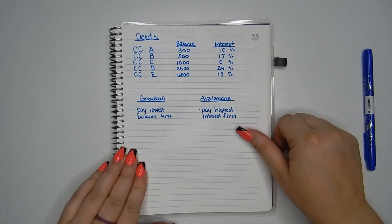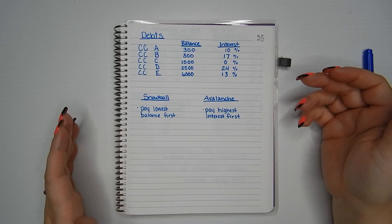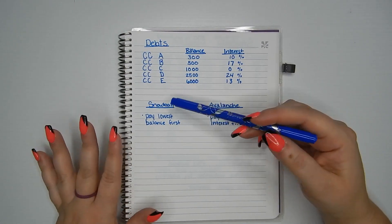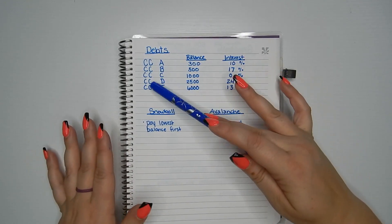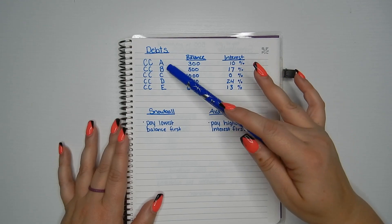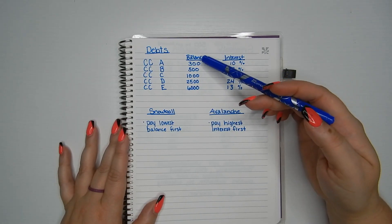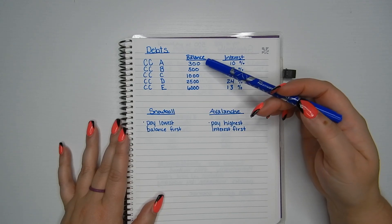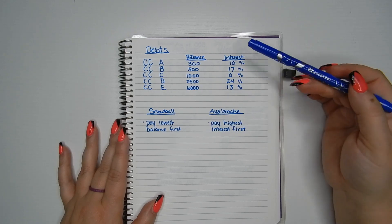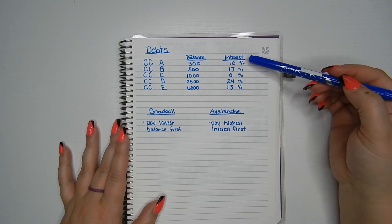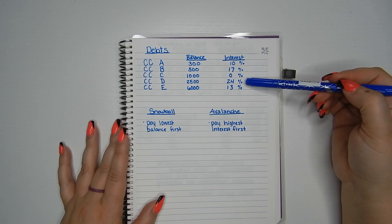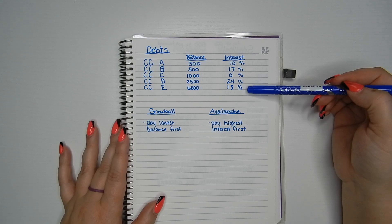So what I did was I set up an example person in debt. So right now this person has five credit cards in debt and it doesn't matter whether they're credit cards, student loans, etc., but I used five credit cards as an example, A, B, C, D, and E, and I listed out the balances. So one has the $300 debt, $500, $1,000, $2,500, and $6,000. And then some of them have an interest rate as well. So 10%, 17%, 0%, 24%, and 13%.